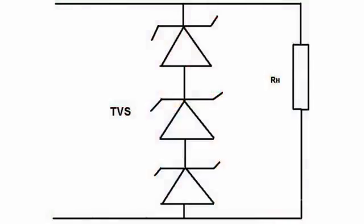You can connect TVS diodes in series in a protected circuit for power increase. Two diodes are sufficient for double power increase, and the corresponding effect can be seen with greater numbers of diodes. Mixed connections of TVS diodes are also possible.